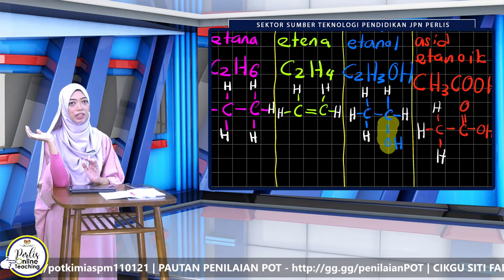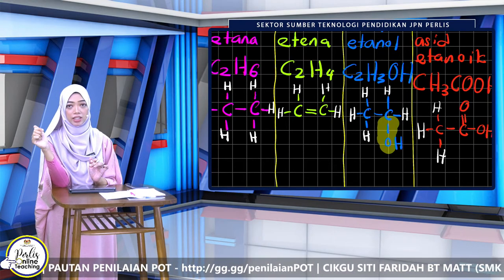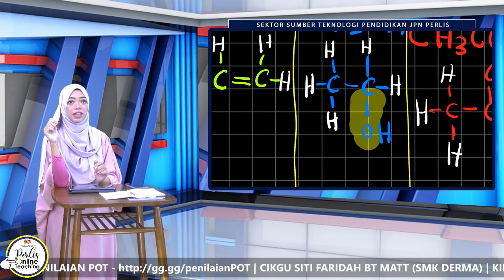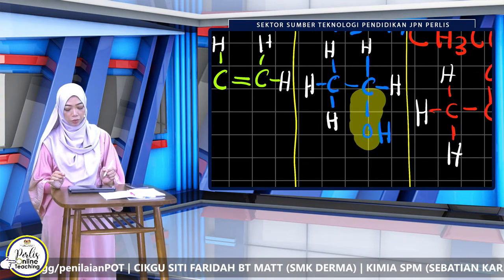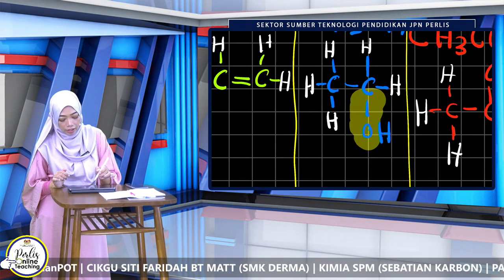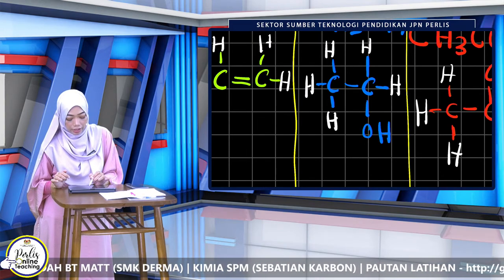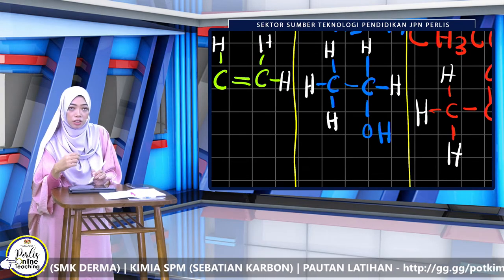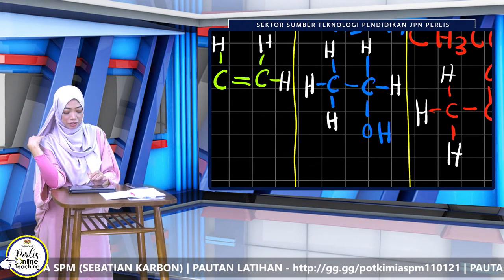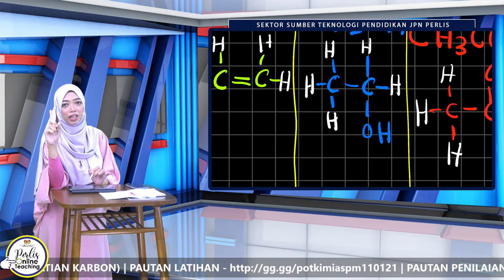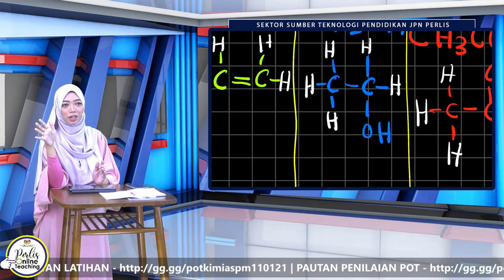Macam etanol, kumpulan berfungsi dia hydroxyl. Lepas buat C itu dua, masukkan OH. Cikgu nak ingatkan: pelajar kadang-kadang tulis OH itu di tengah-tengah. Lukis ikatan karbon dengan oksigen perlu betul — oksigen terikat kepada karbon, hidrogen pula terikat kepada oksigen. Jadi hidrogen tidak boleh terikat kepada karbon — dah salah konsep, sebab hidrogen hanya ada satu ikatan. Di lukisan ni pun penting untuk awak tengok betul-betul.